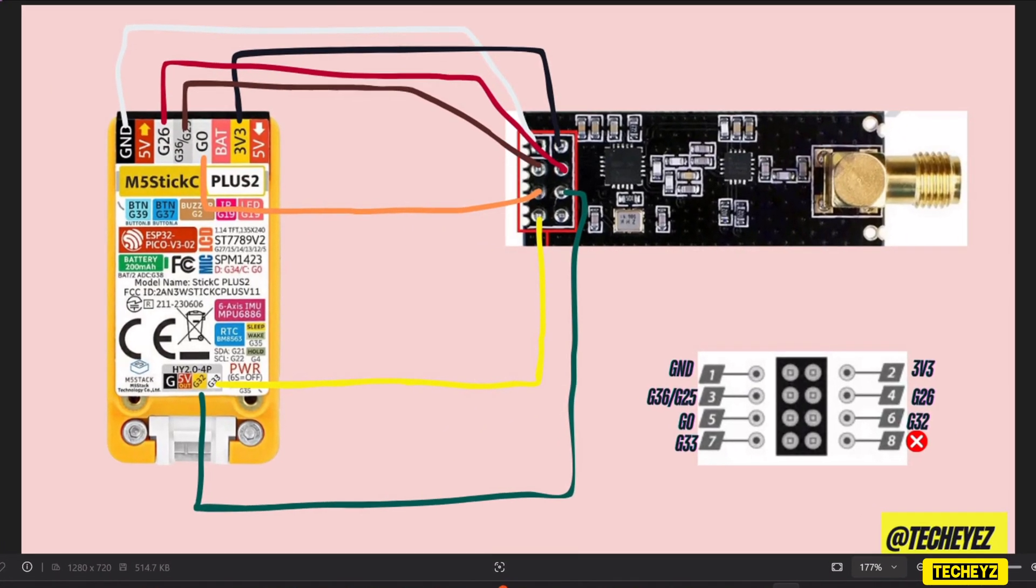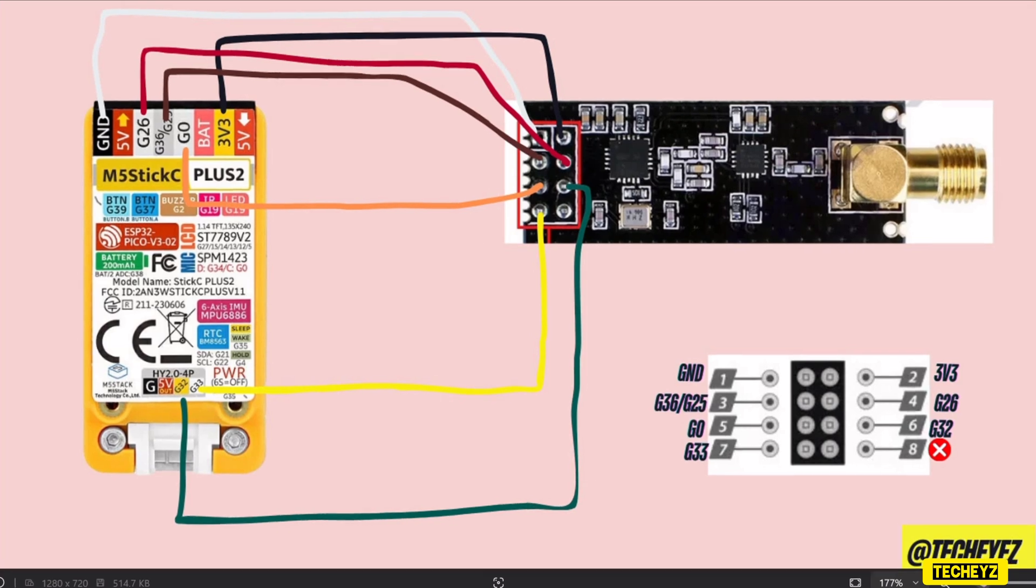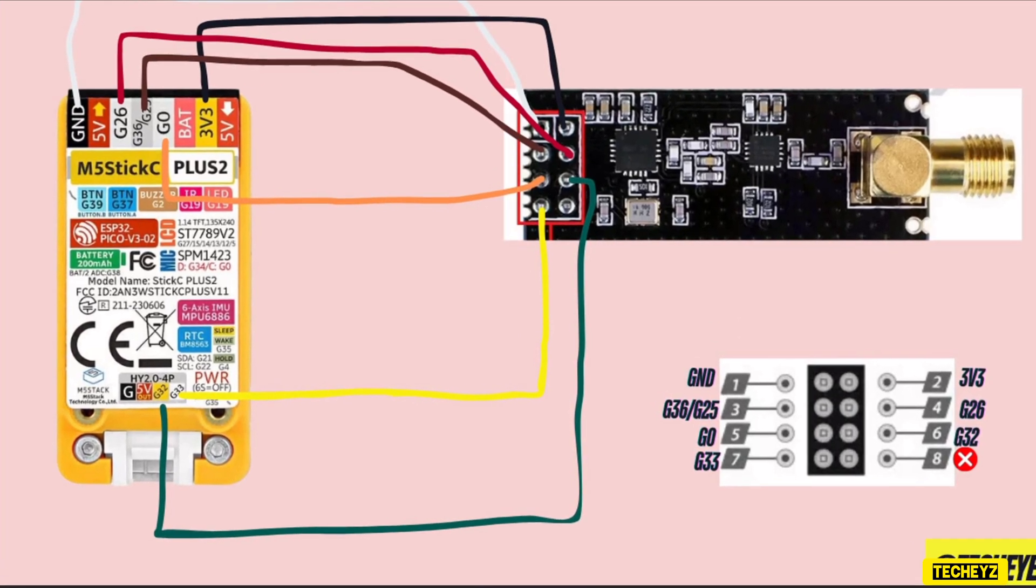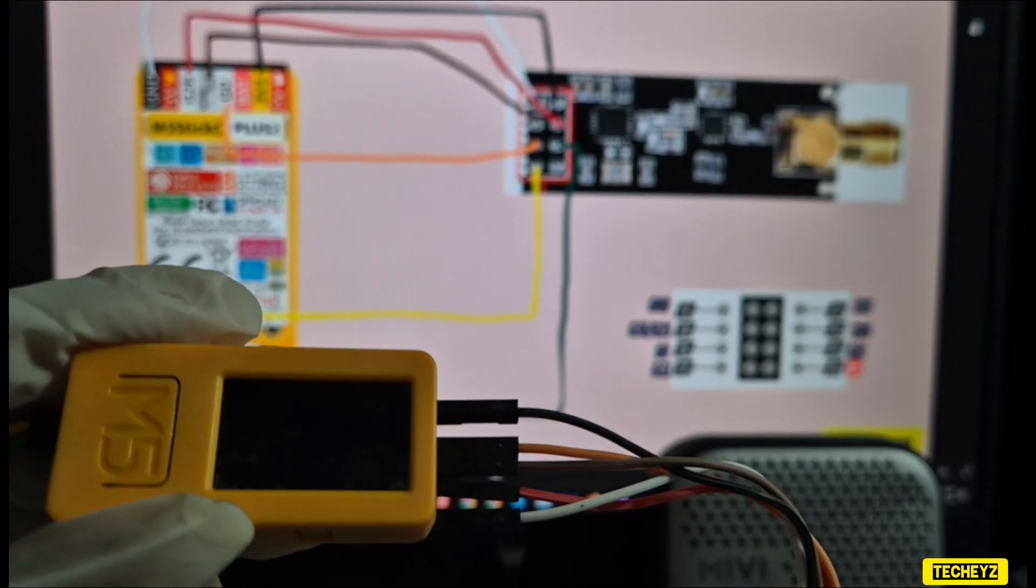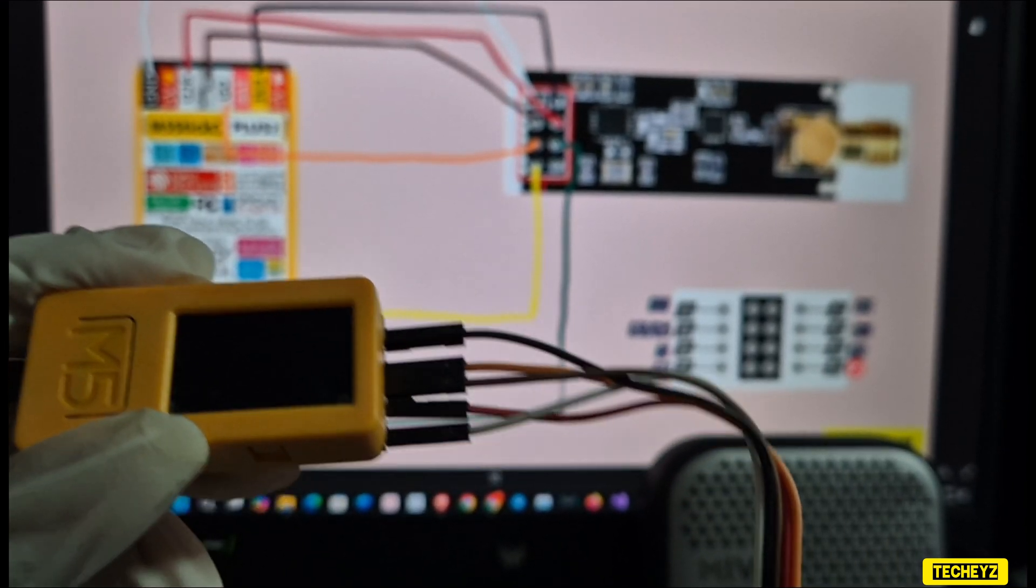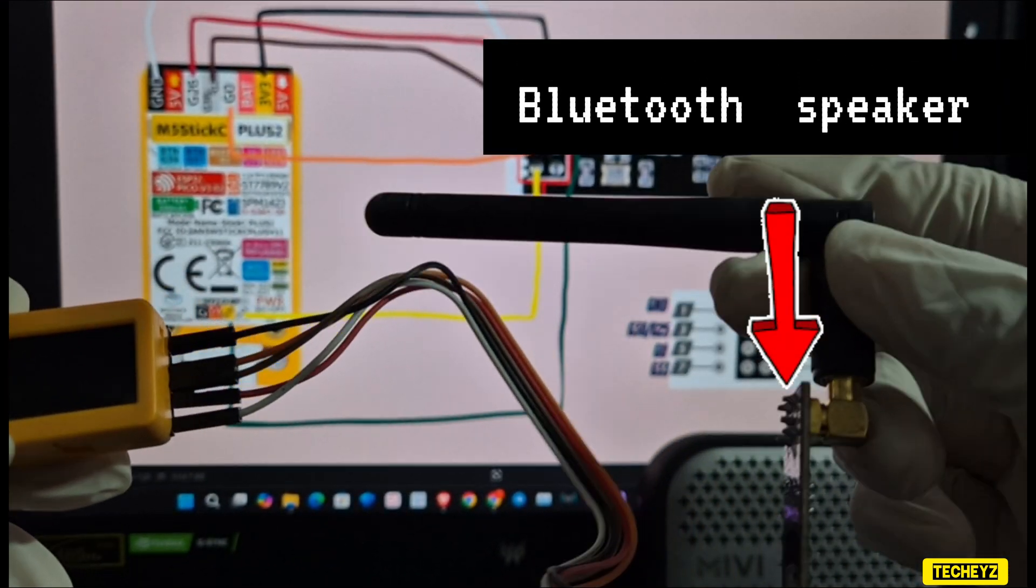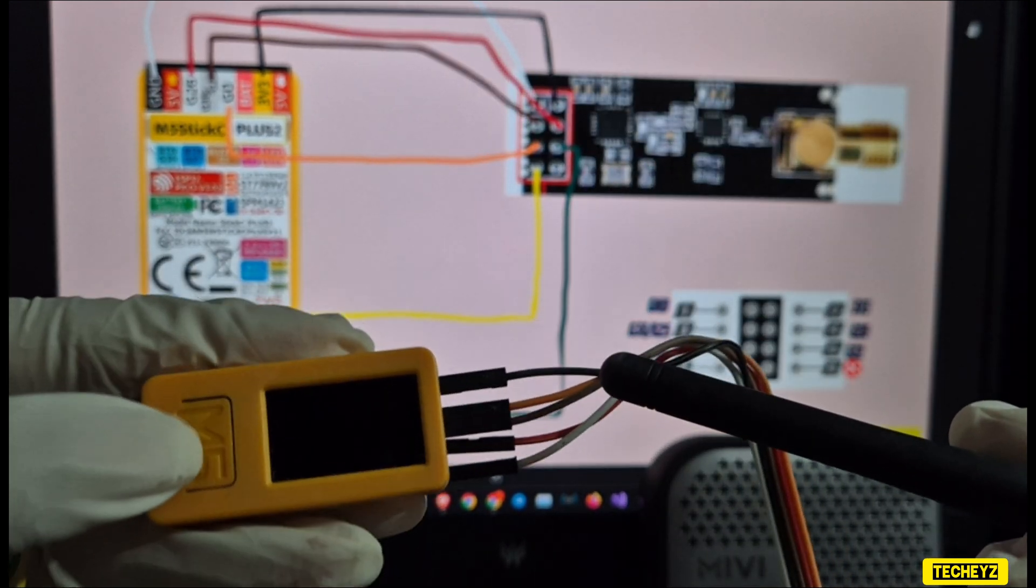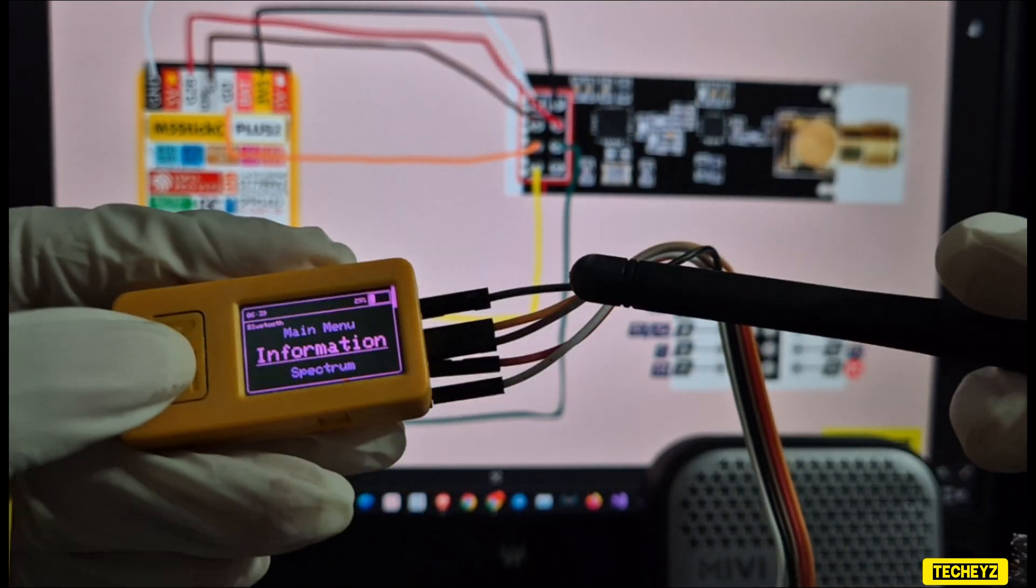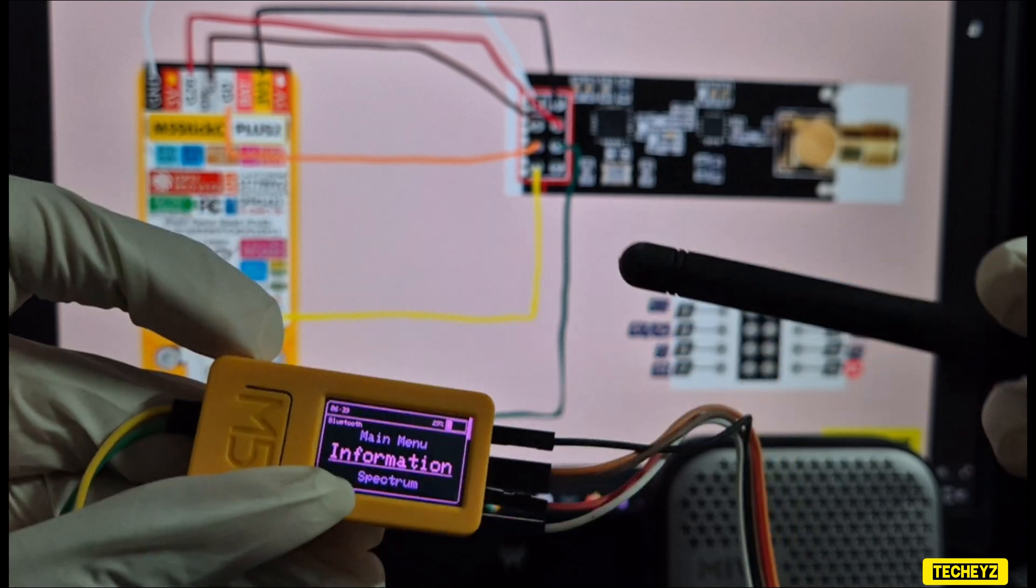If you face any difficulties while connecting the wires, you can come back and check the circuit diagram which I have included in the video. Now for our final test, as you can hear, there is random music playing in the background from my Bluetooth speaker and I have connected to my mobile phone. I will go to my M5 Stick module and I will just select the jammer module.